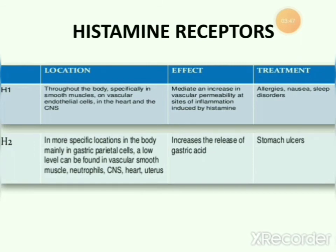The H2 receptor is located mainly in gastric parietal cells, with lower levels in vascular smooth muscle, neutrophils, CNS, heart, and uterus. H2 receptor activation increases the release of gastric acid, and it is targeted in the treatment of stomach ulcers.